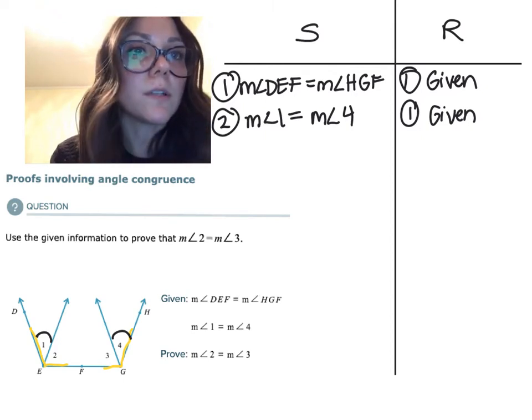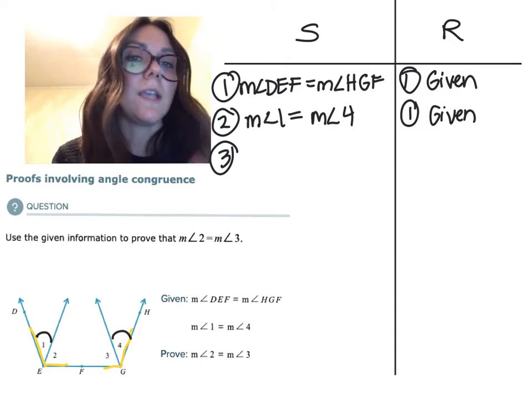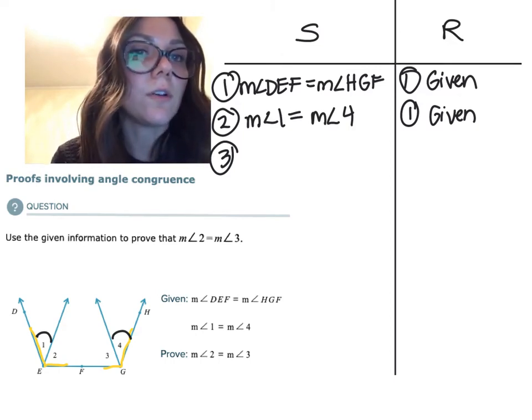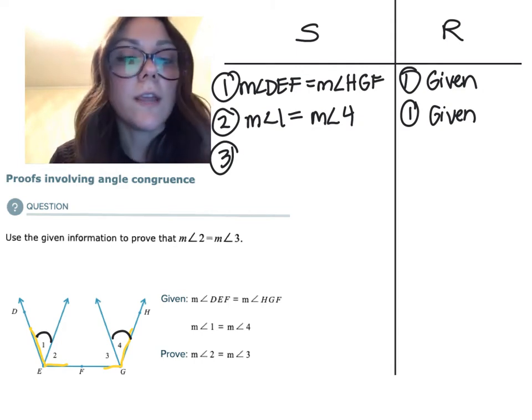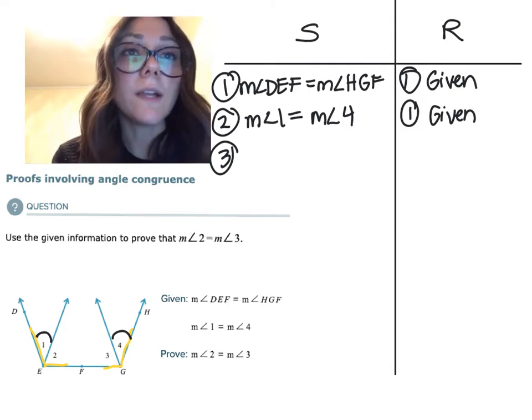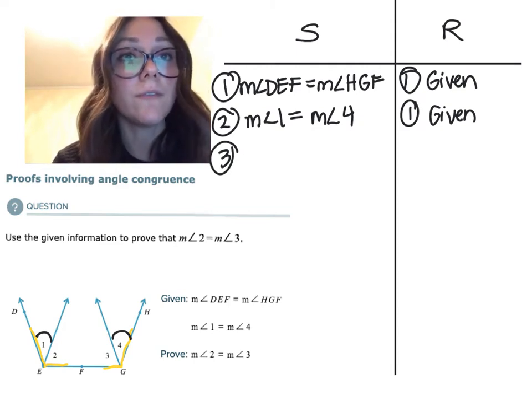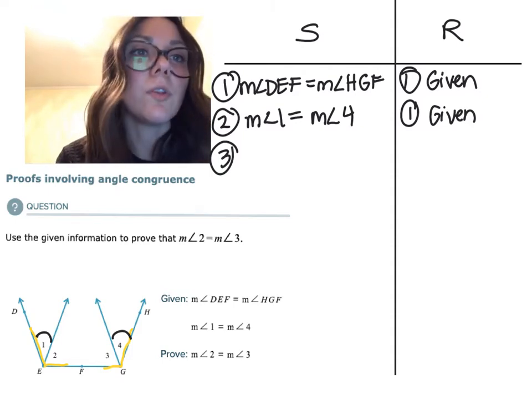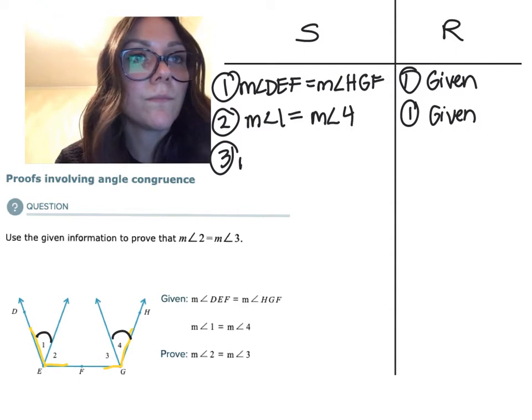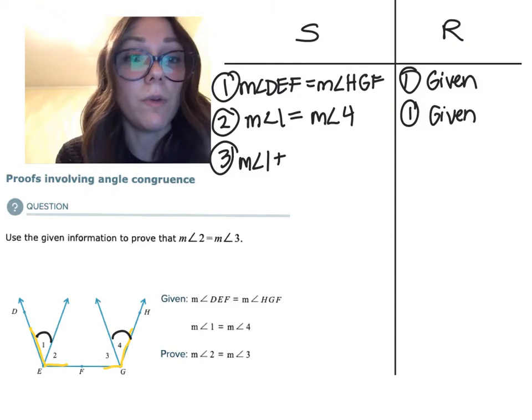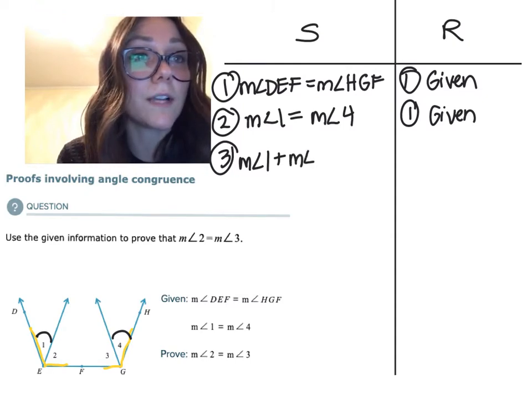Anytime we're relating parts and wholes, we're going to be using an addition postulate. In this case, the angle addition postulate. So the parts making up angle DEF are angles one and two. The correct notation is measure of angle one plus measure of angle two equals the measure of angle DEF. Not congruence, not angle one, but the measure of angle one. If you don't type this in correctly, ALEX will not let you move on.